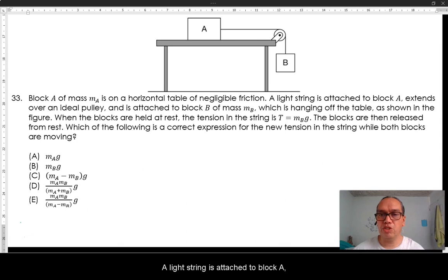A light string is attached to block A, extends over an ideal pulley and is attached to block B of mass MB, which is hanging off the table, as shown in the figure.